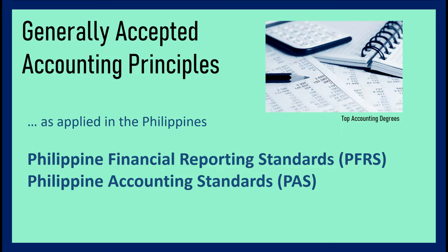These PFRS and PAS are our guiding principles on how to record transactions — when something is bought, how much to record it for, and what information to include in financial statements. Generally accepted accounting principles are our guiding principles as accountants to record transactions appropriately, and they help ensure consistency and uniformity in how we report things in accounting.